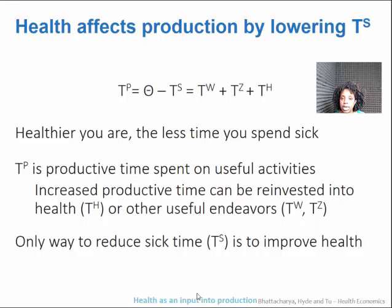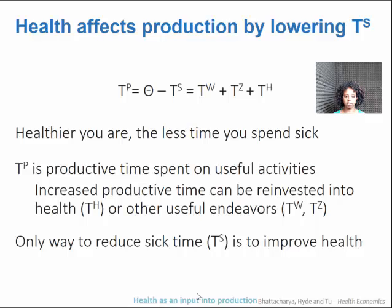Health affects production by lowering the time that you spend being sick. So t of p, productive time, is basically just your total time minus your sick time — theta minus ts. T of p equals the sum of the time you spend working, the time you spend on utility of non-health, and the time you spend investing in your health. The healthier you are, the less time you spend sick. Productive time is spent on these useful activities, and when you get more productive time you can allocate that towards health, work, or fun as you see fit.